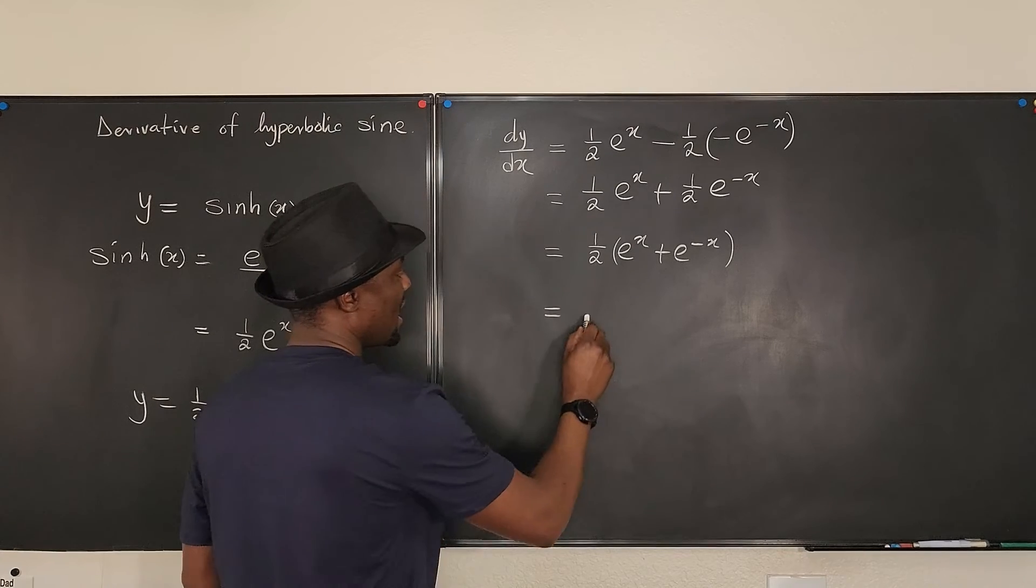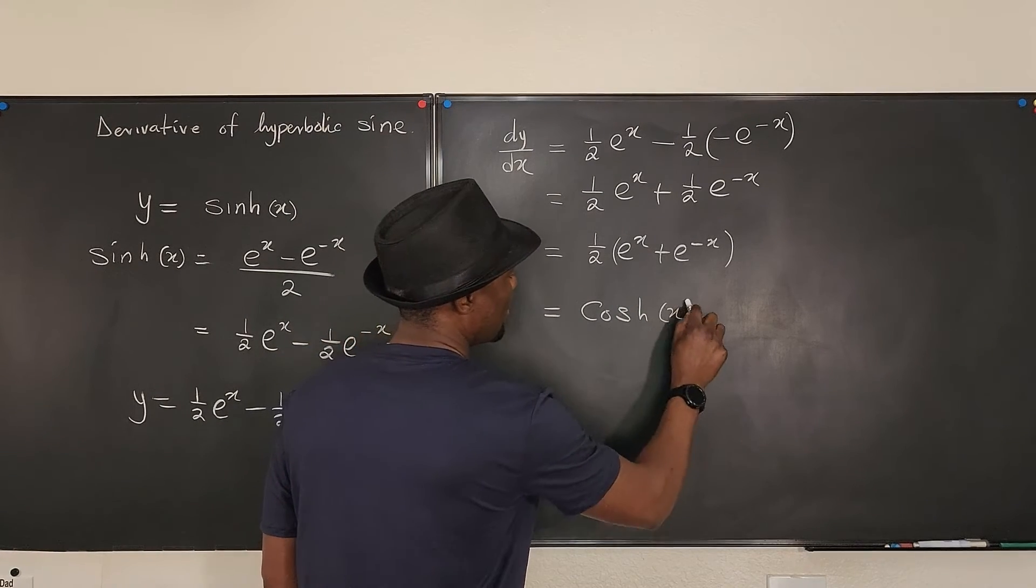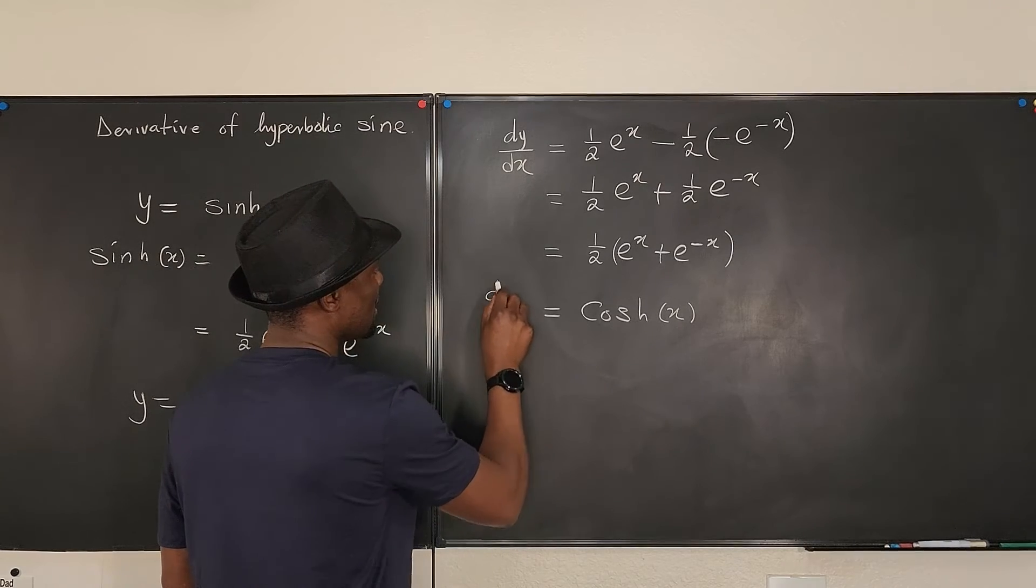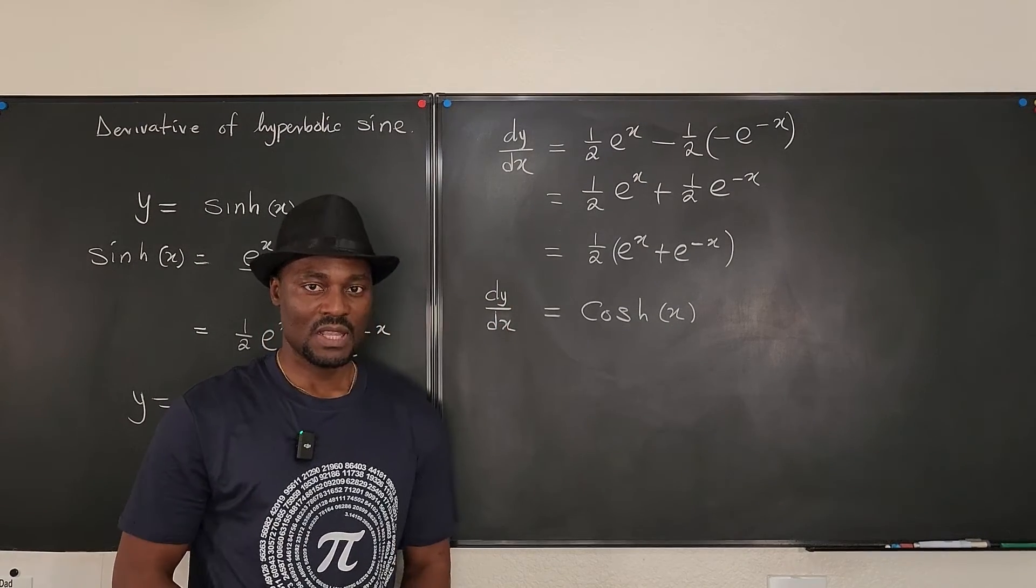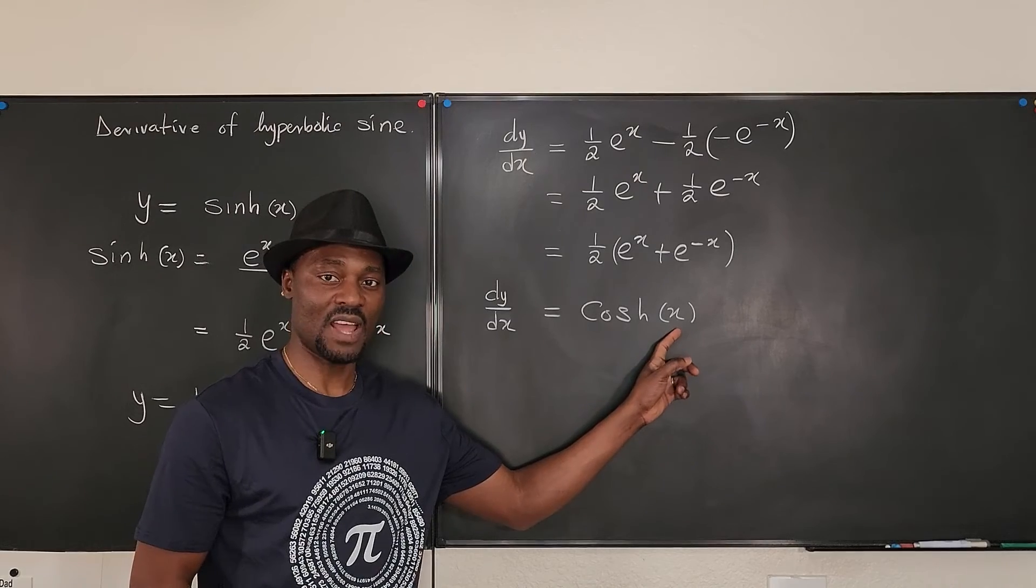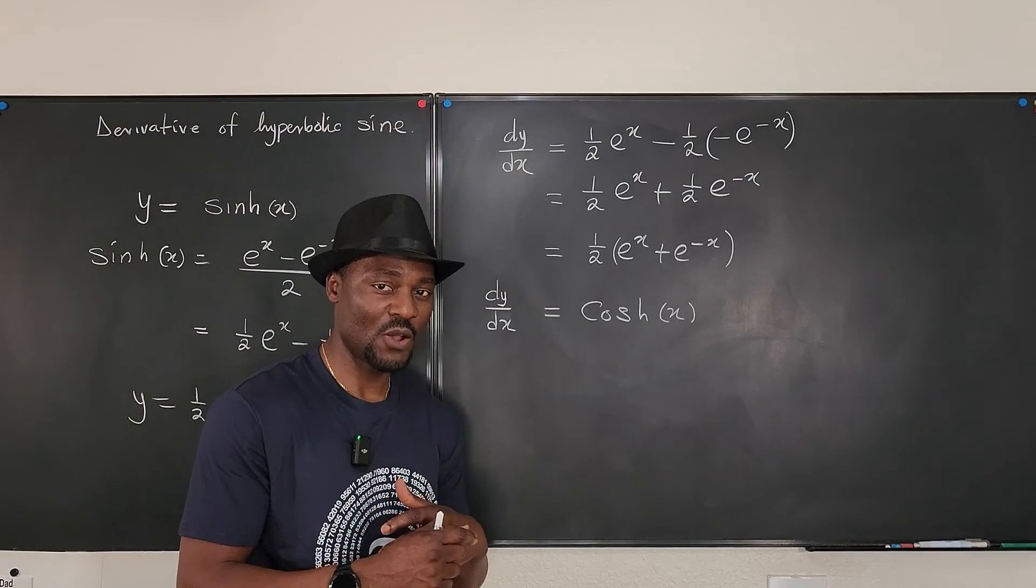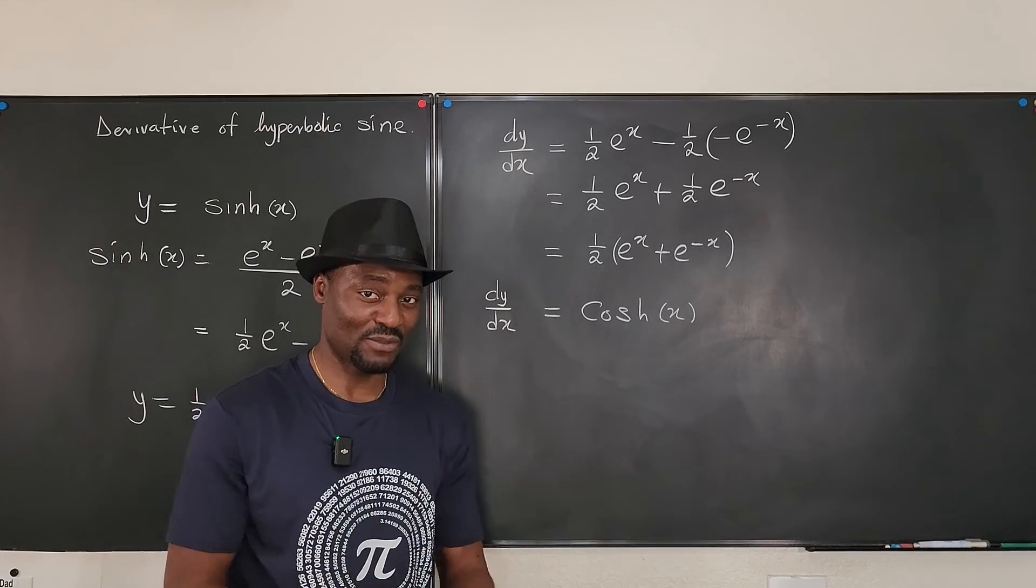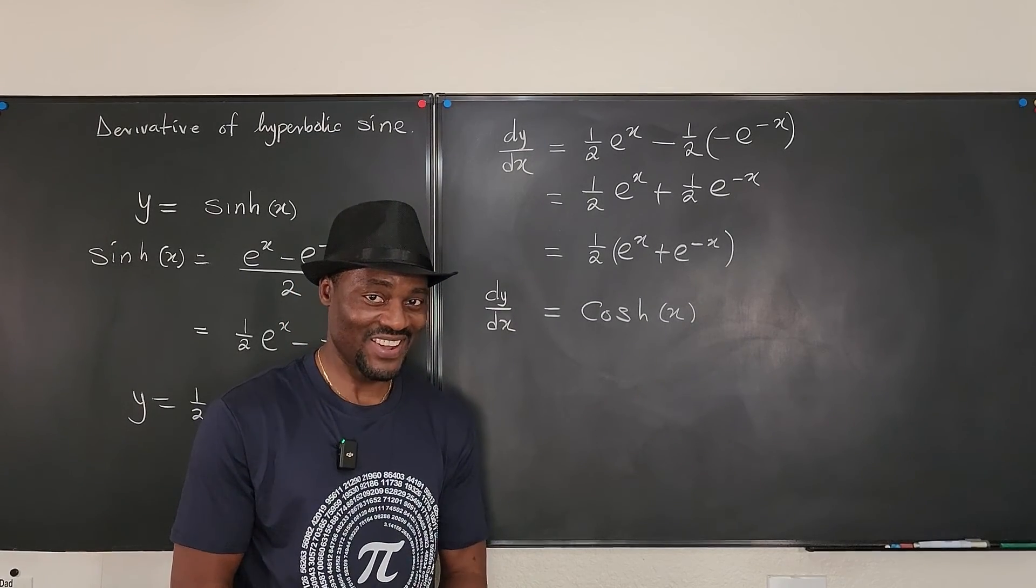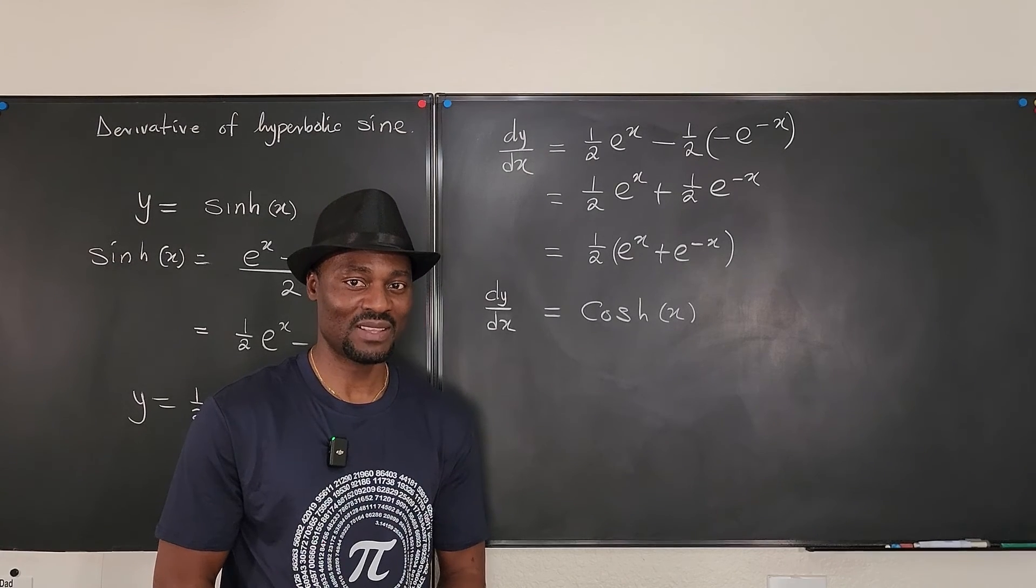And this is what you call the hyperbolic cosine of x. So dy/dx is equal to the hyperbolic cosine of x. If we differentiate hyperbolic cosine, will we get minus hyperbolic sine? We don't know yet—we have to figure that out. Until then, never stop learning, because those who stop learning have stopped living. Bye bye.